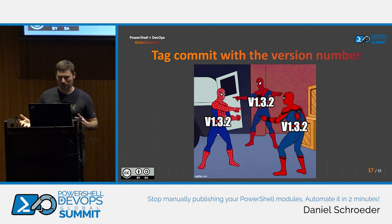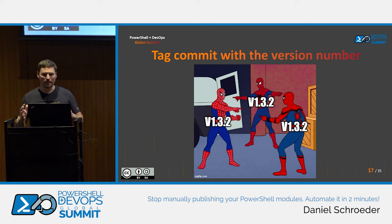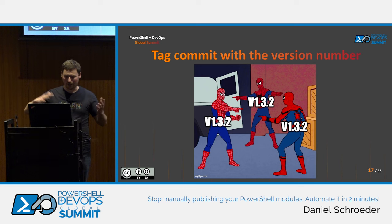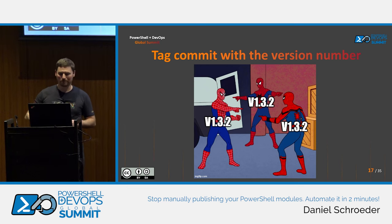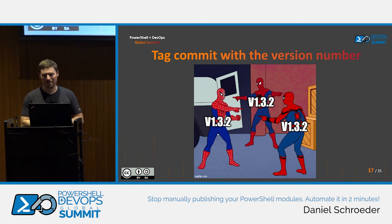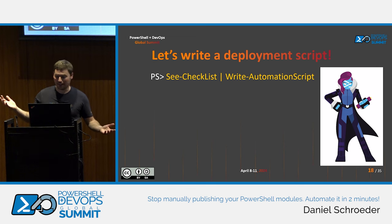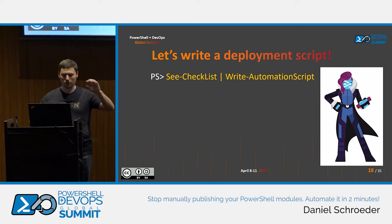Then someone reports a bug saying things broke in version 1.3.2. You go back into git history and can't tell which commit corresponds to that version because 20 different commits happened that day. You need to tag your git commits with the version number. Now our deployment checklist is really long, and any checklist I see is basically just something I can automate away in PowerShell.